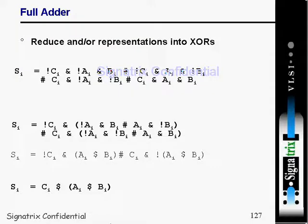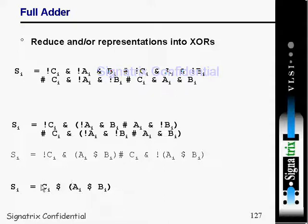The full adder reduces AND/OR operations into XOR. After taking common factors, you get: Sum = Ci XOR Ai XOR Bi. This is the basic equation for the sum in a full adder — Sum = A XOR B XOR Cin.